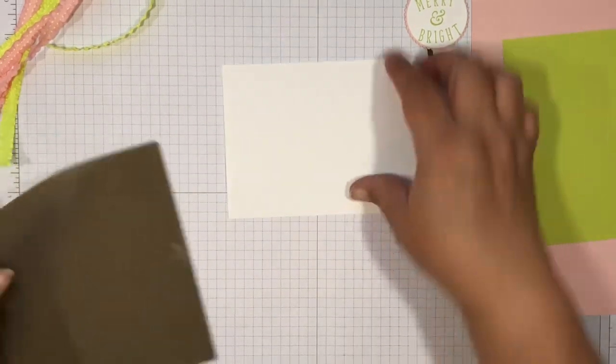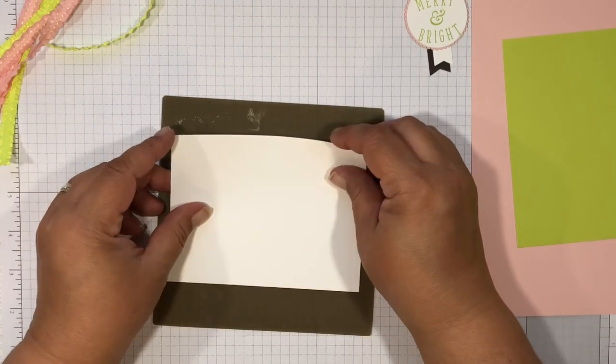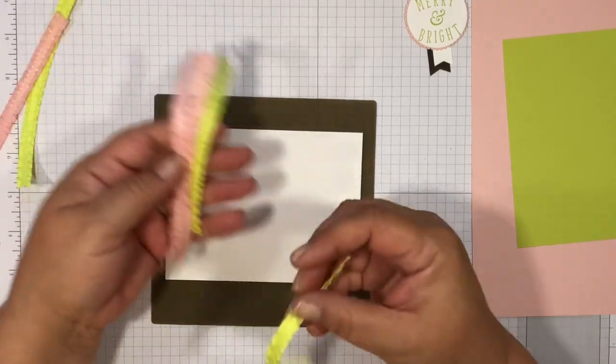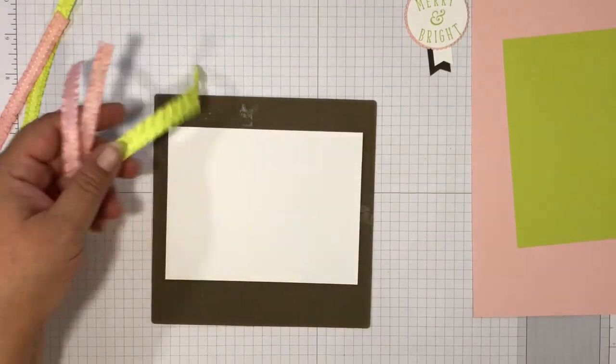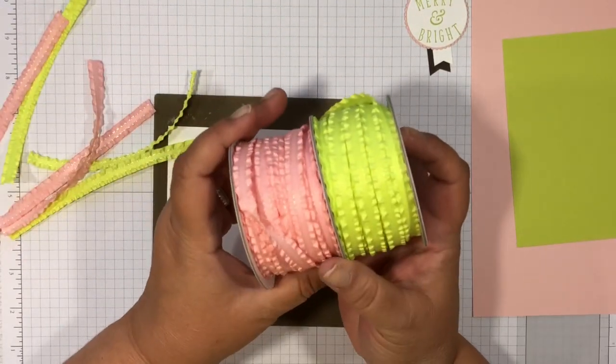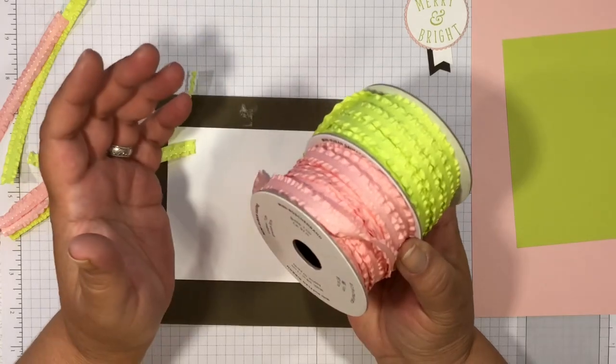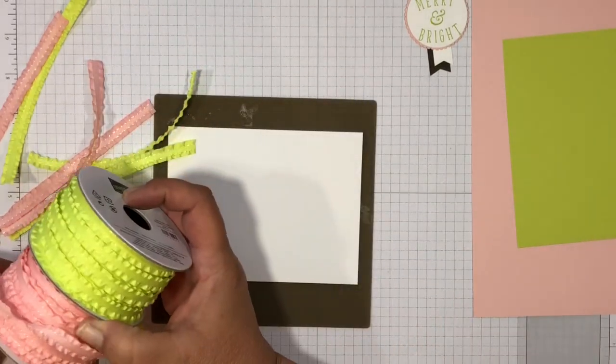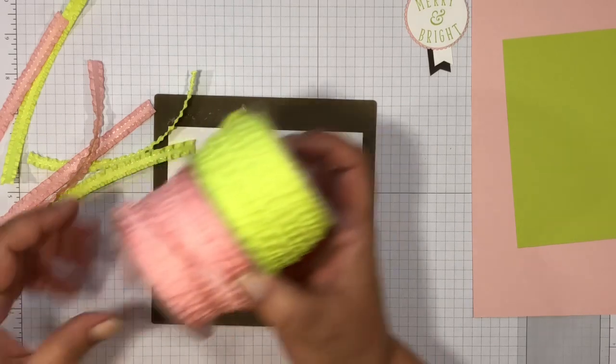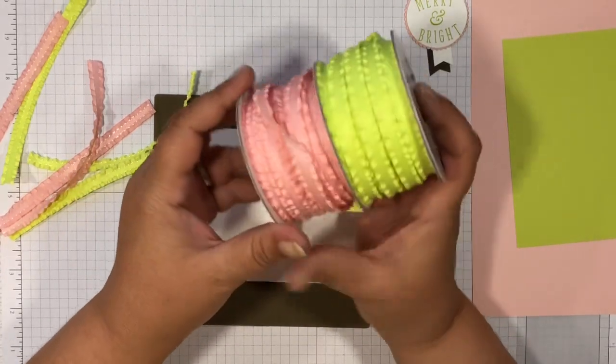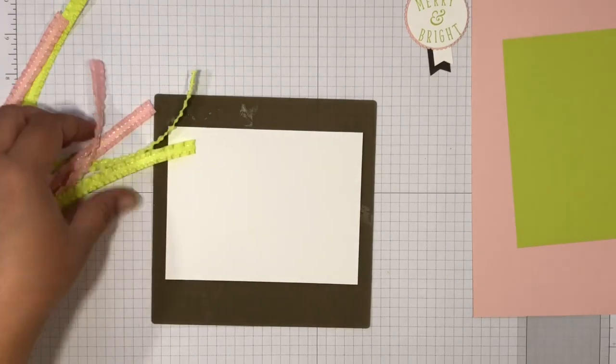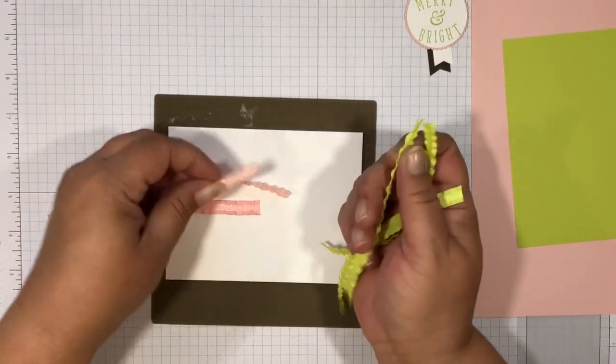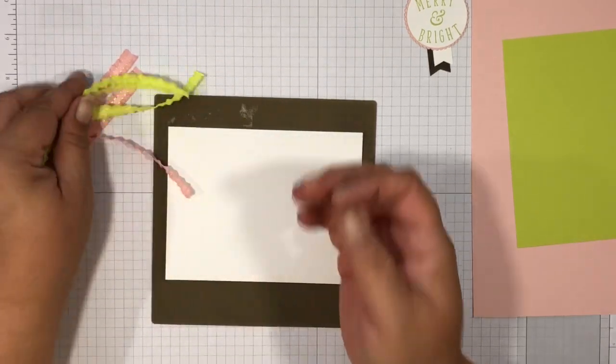That's ready to go, getting ready for our card. The next thing we're going to do is take our whisper white piece and we're going to use this ribbon right here. This is our lemon lime twist and powder pink and it is mini ruffled ribbon and it's about seven eighths inch wide. We're going to use this.